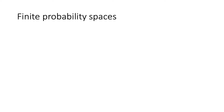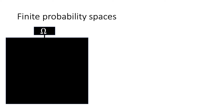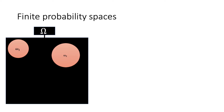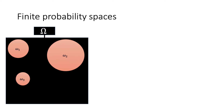A finite probability space is used to model an experiment where a finite number of outcomes can occur. We typically call the set of all possible outcomes omega. So in my picture, omega contains everything that could happen as an outcome — this is our universe — and the things inside this universe are the outcomes of the experiment. Maybe there's a first outcome, another possible outcome, another outcome, and so on.